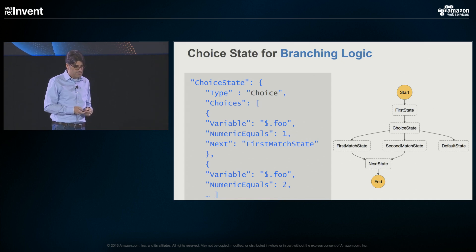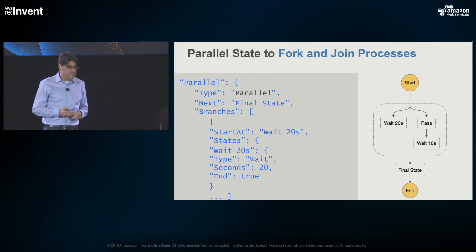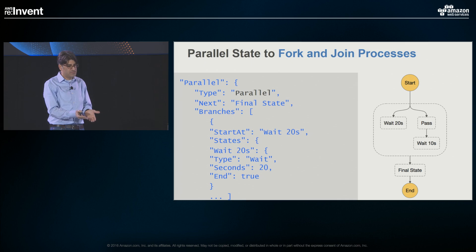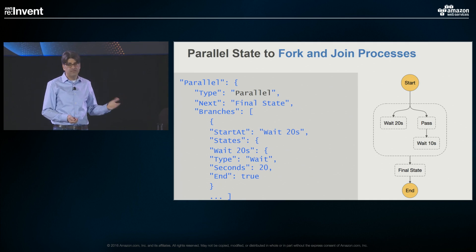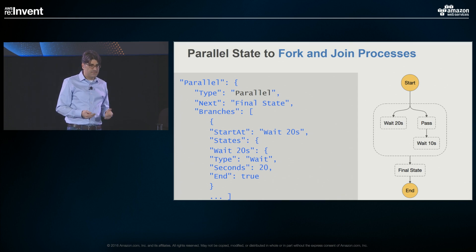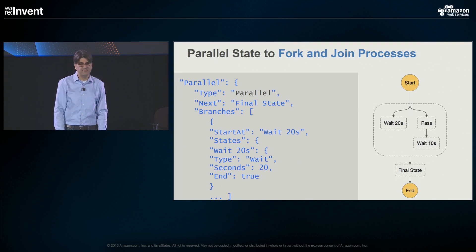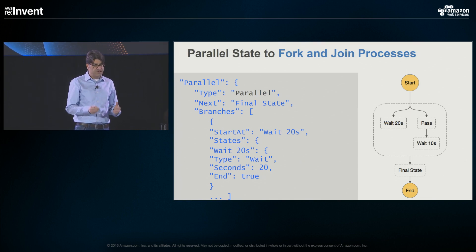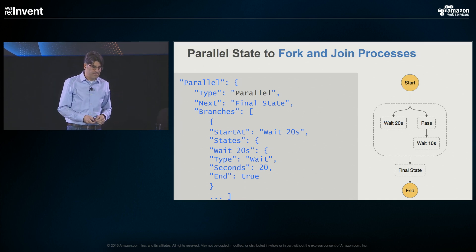Parallel state lets you fork and join processes. You specify the state type 'parallel', tell it what the next state is at the end of all the parallel execution — where it all gets joined — and then define the branches. Each branch specifies where it starts: the first branch starts at 'wait 20 seconds' as a wait state, the second branch is a pass state. As you define each of these branches, you get a state machine that puts the parallel branches in a box so you can see it's a parallel set. The input gets copied across all the branches, goes down through them, and the results are brought back together in an array given to that final state as its input. When we talk about parallel we're talking about executions inside the state machine, as distinct from concurrent executions which are many state machines running at once.